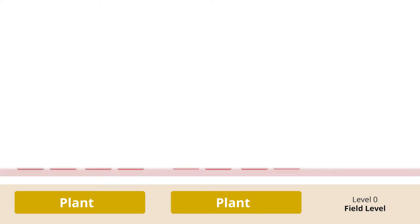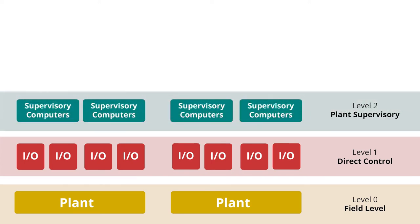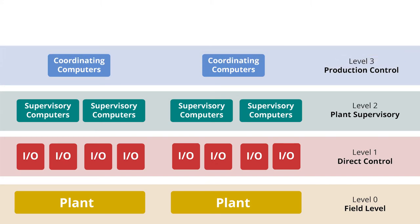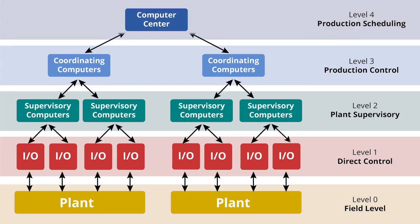Level 1 contains the industrial input and output modules. Level 2 contains the supervisory computers, which collect information on the system and provide the operator control screens. Level 3 is the production control level, which does not directly control the process, but is concerned with monitoring production and monitoring targets. Level 4 is the production level itself.